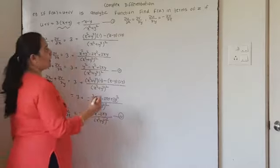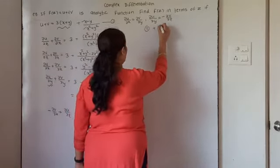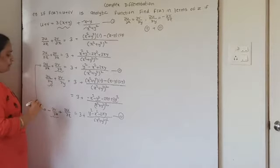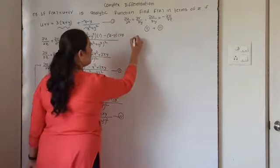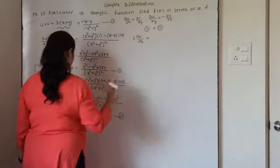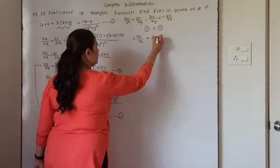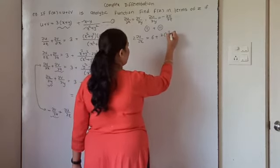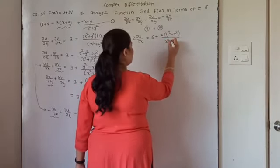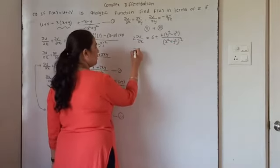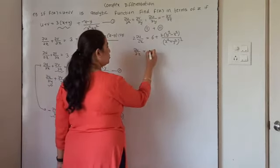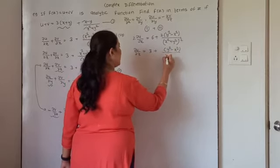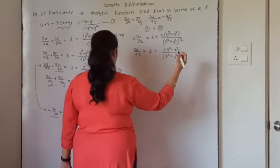Now we will add equation 2 and equation 3. If I add these two equations, the plus ∂v/∂x and minus ∂v/∂x will get cancelled. ∂u/∂x plus ∂u/∂x gives 2 times ∂u/∂x equal to 3 plus 3, which is 6, plus, if I add the fractions, plus 2xy minus 2xy will get cancelled. You will get 2 times (y squared minus x squared) upon (x squared plus y squared) squared. So dividing throughout by 2, the value of ∂u/∂x is 3 plus (y squared minus x squared) upon (x squared plus y squared) squared. Say this as equation number 4.